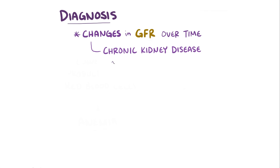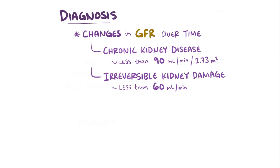The diagnosis of chronic kidney disease comes down to looking at changes in the glomerular filtration rate over time. Chronic kidney disease might be suspected with a GFR of less than 90 mL per minute per 1.73 m2. Irreversible kidney damage might happen with a GFR below 60 mL per minute per 1.73 m2. To confirm the diagnosis, a kidney biopsy can be done to look for changes like glomerulosclerosis.